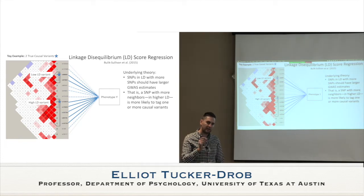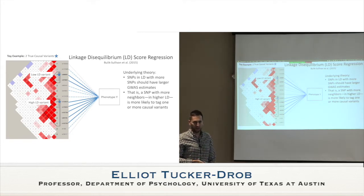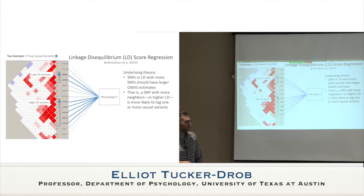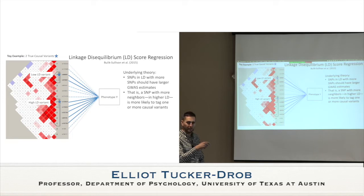Here's my one- or two-slide overview of LD score regression. The key premise is that when we have variants — represented here as a rotated correlation matrix showing correlations between SNPs, which we call the LD matrix — some variants have a lot of red, meaning they're highly correlated with more proximal variants, while others are correlated with fewer adjacent variants.